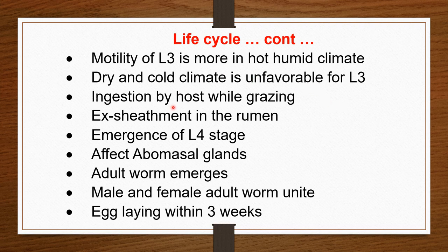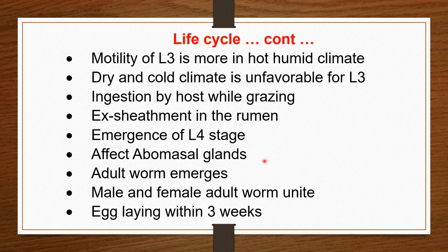There is ingestion of this larva by ruminants during grazing. After ingestion, they move to the rumen, and the fourth stage larva emerges there. This fourth stage larva then enters the abomasal glands, slowly developing into adult worms. The adult male and adult female copulate and lay eggs. The total time required is about three weeks. This is a simple and easy life cycle.